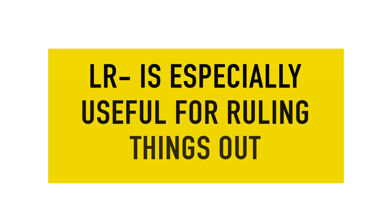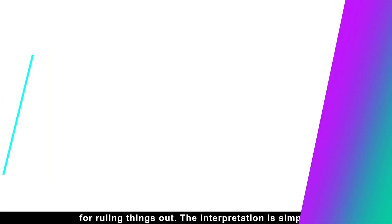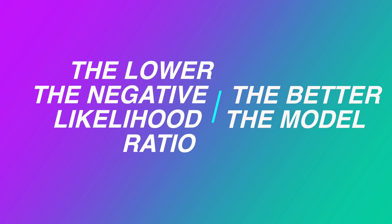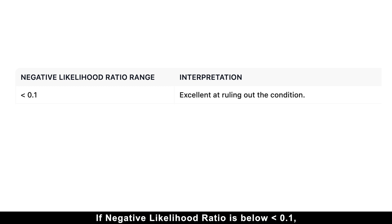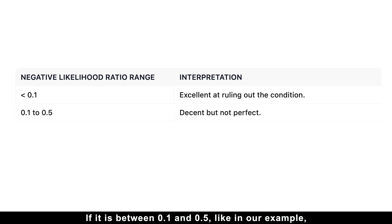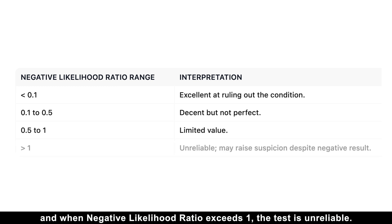The negative likelihood ratio is especially useful for ruling things out. The lower the negative likelihood ratio, the better. If it is below 0.1, the test is excellent at ruling out the condition. If it is between 0.1 and 0.5, the test is decent but not perfect. If it is between 0.5 and 1, the test has limited value. And when it exceeds 1, the test is unreliable.